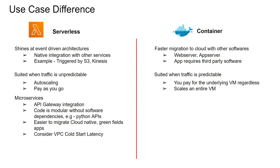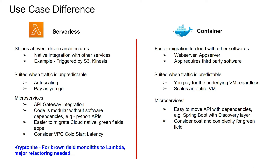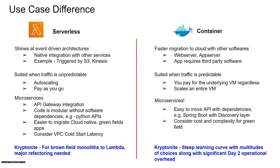Now let's talk about the kryptonite for these two. For serverless, migrating brownfield monoliths to Lambda requires major refactoring. For containers, the learning curve is steep because there are a multitude of choices, and since you manage the underlying infrastructure, there is significant day-two operational overhead.